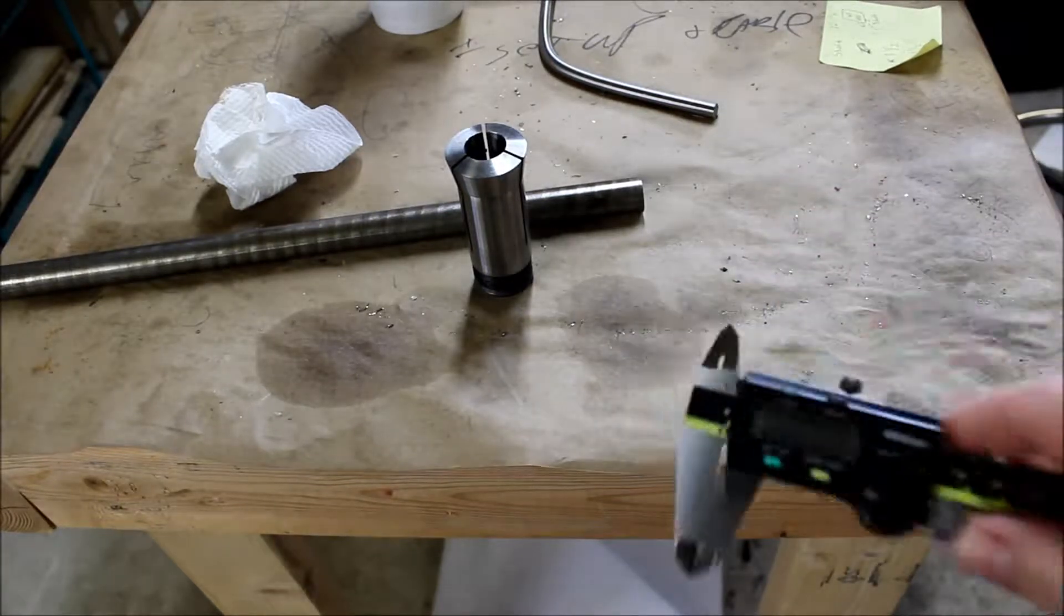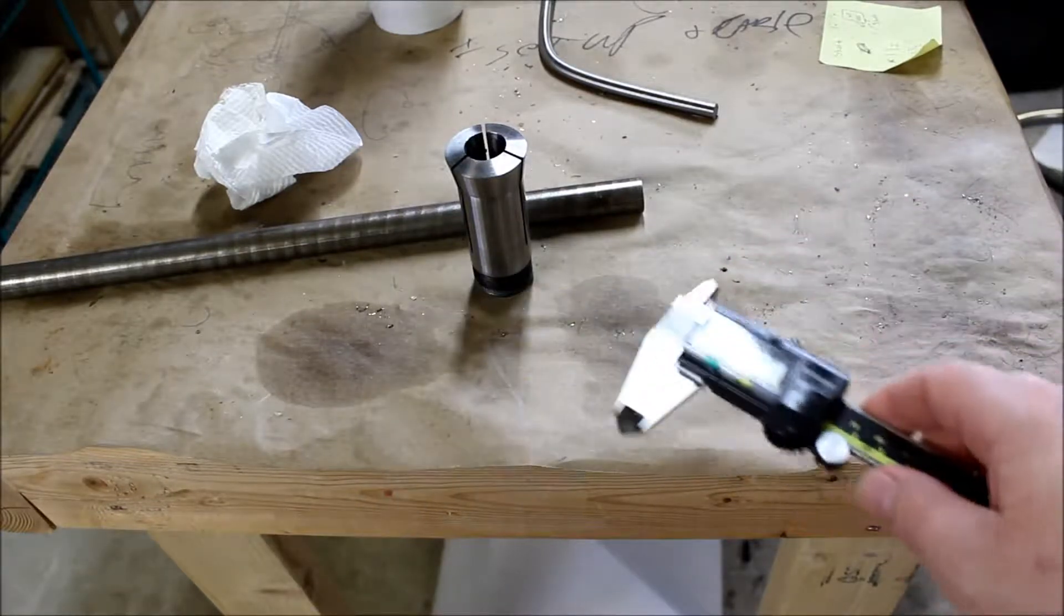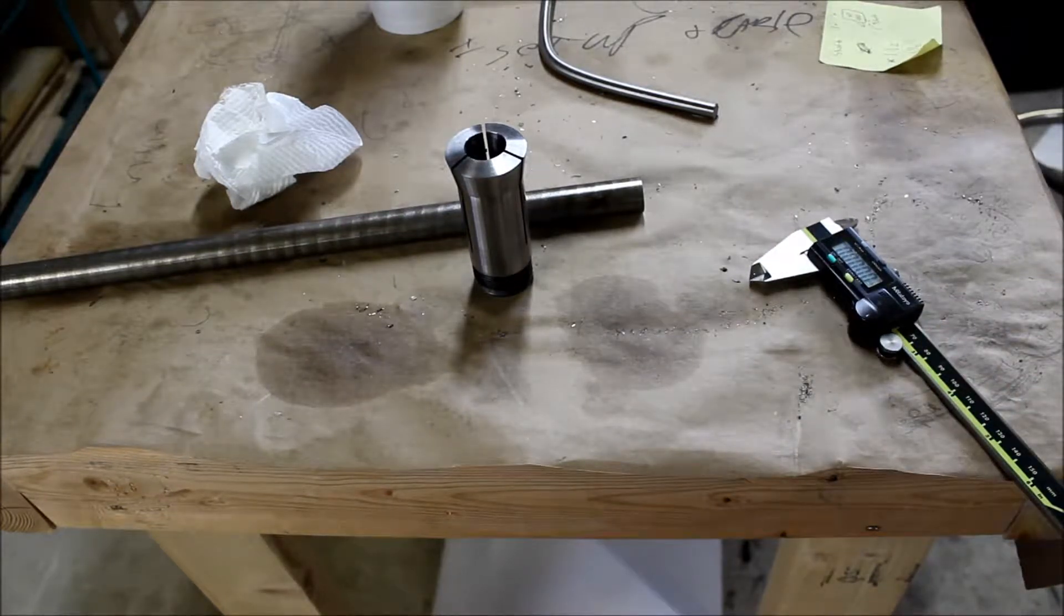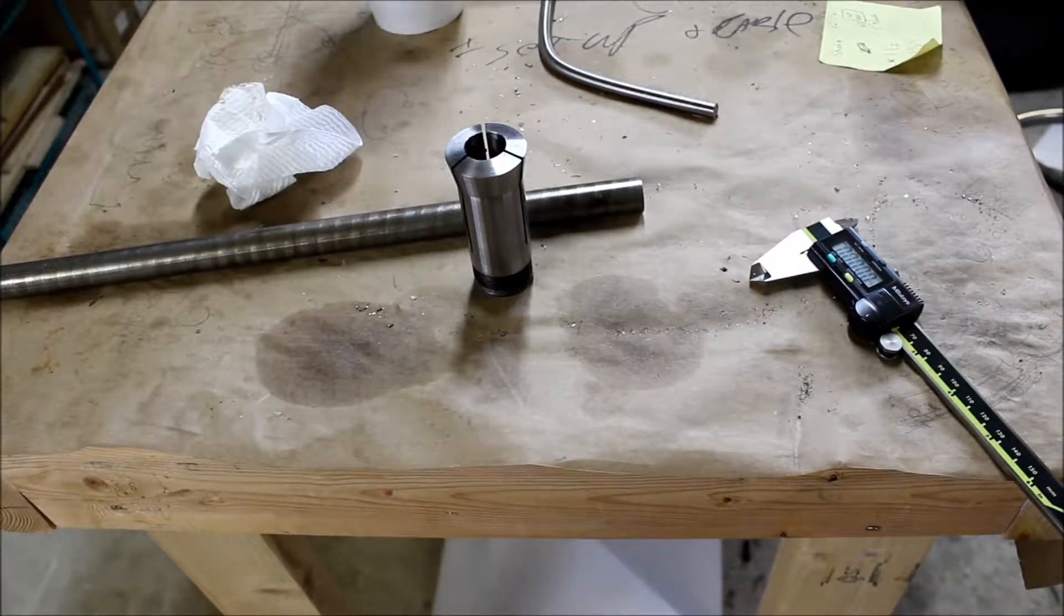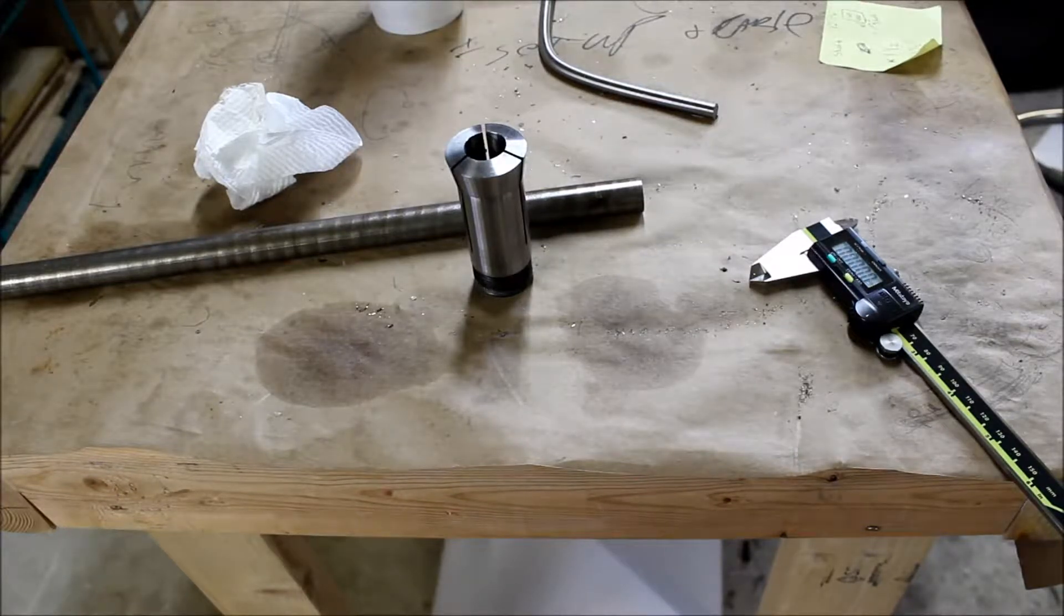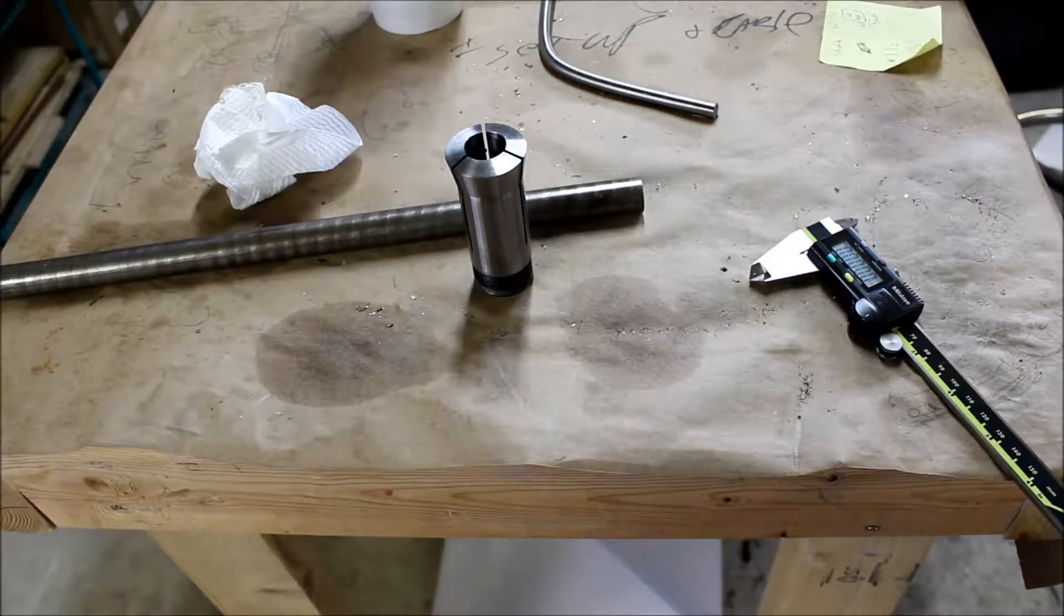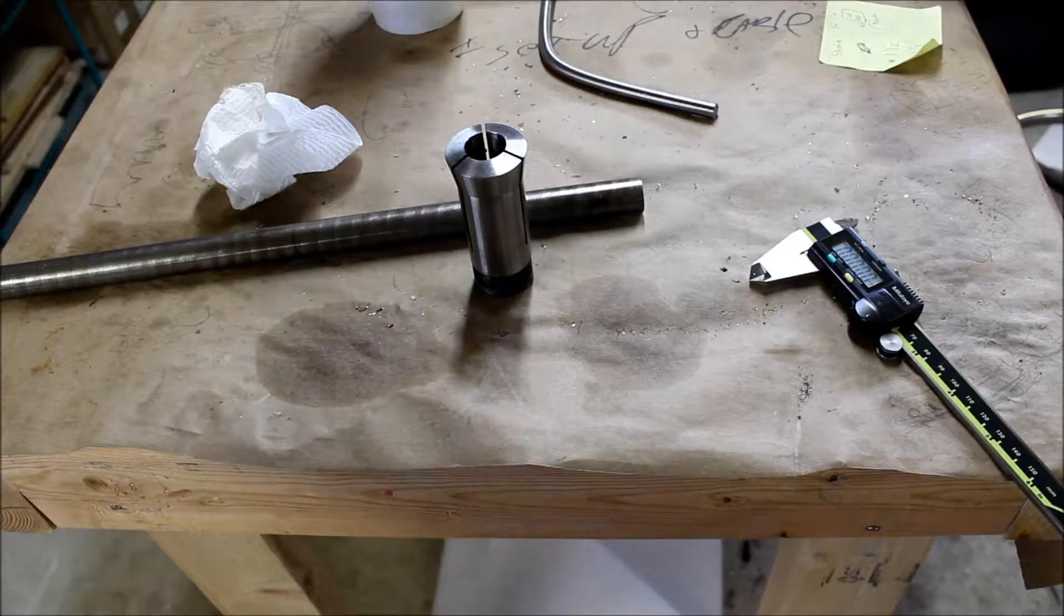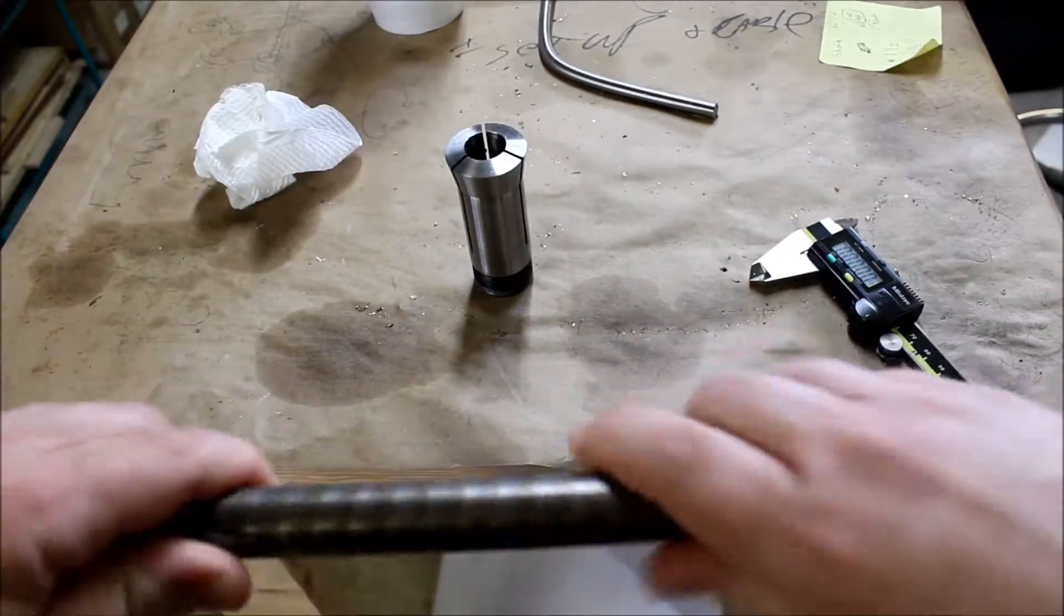These are the best calipers I have. They'll measure down to half a thou. So the potential problems, we're going to start with either the stock or the collet here itself. Either the stock could be a little bit big or the collet could be a little bit small or we'll figure it out as we go. So first I'm going to measure the diameter of this bar as best I can and make sure it's not too big for the collet, and then we'll see how it fits in the collet and start progressing from there.